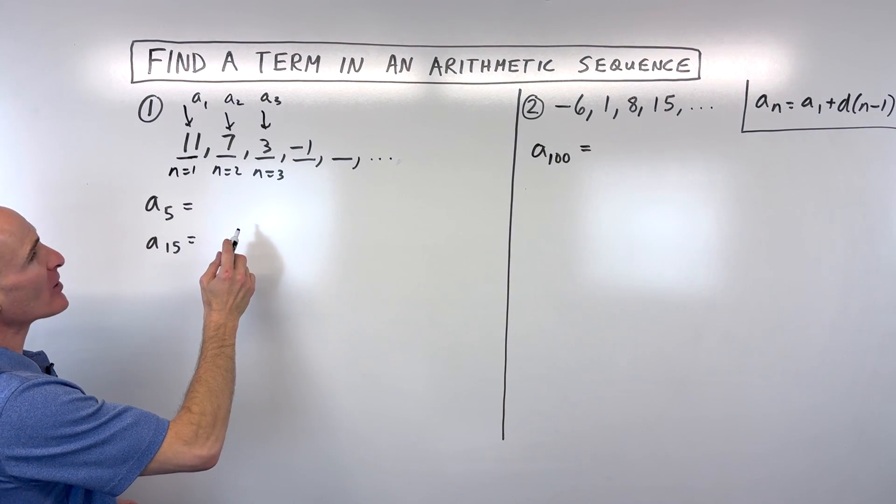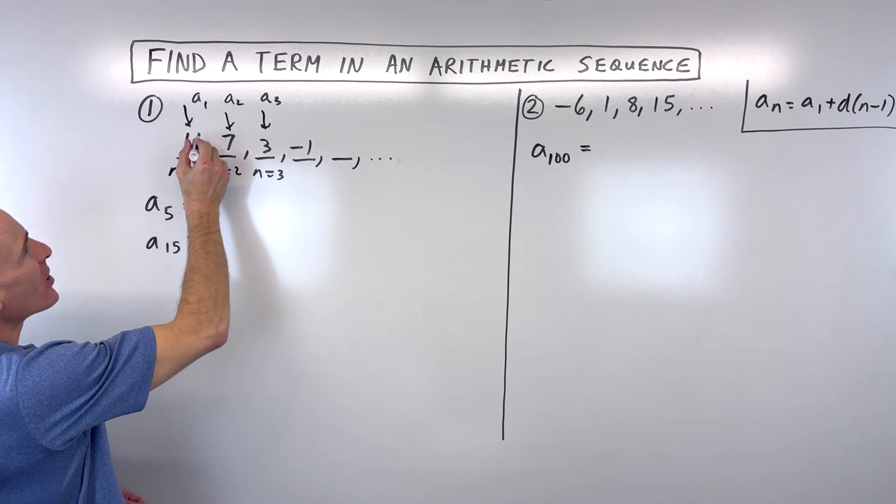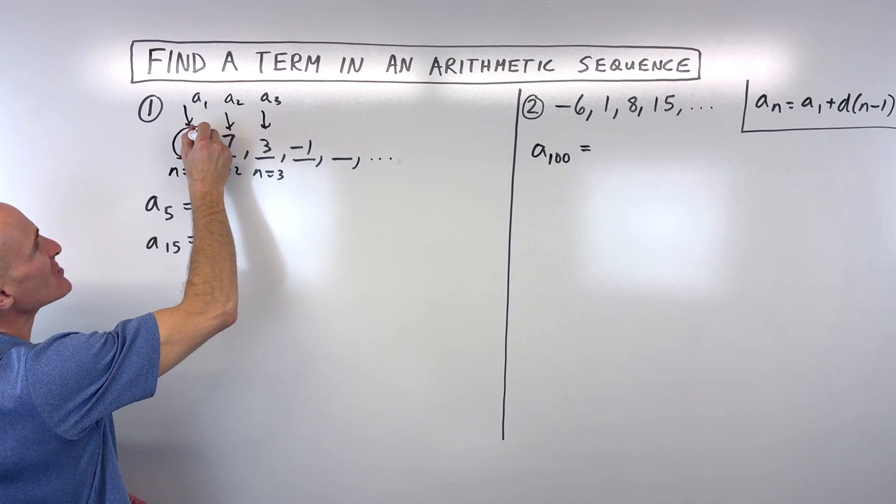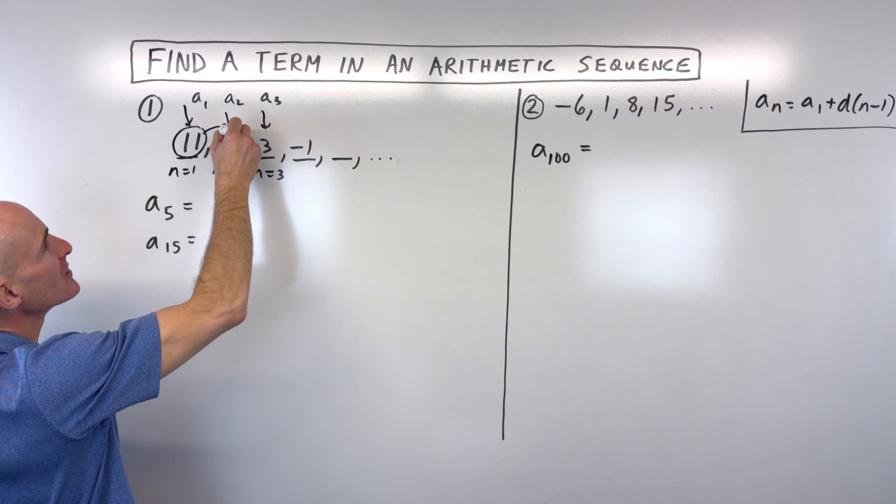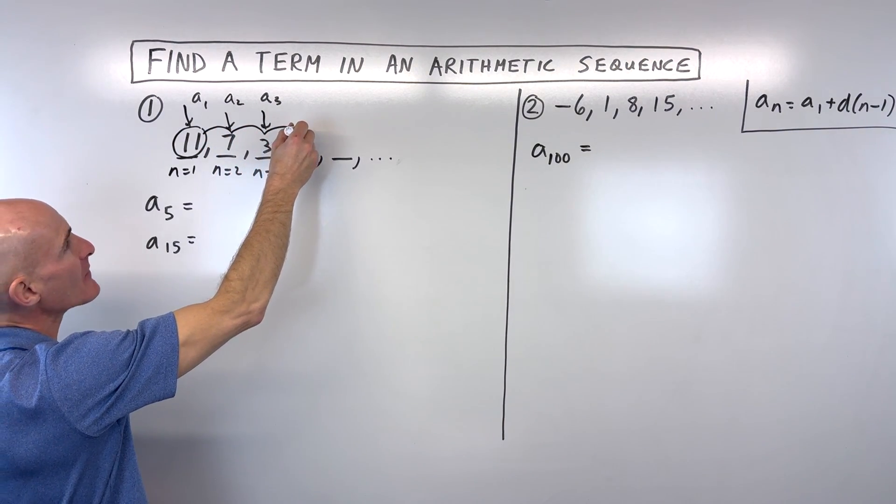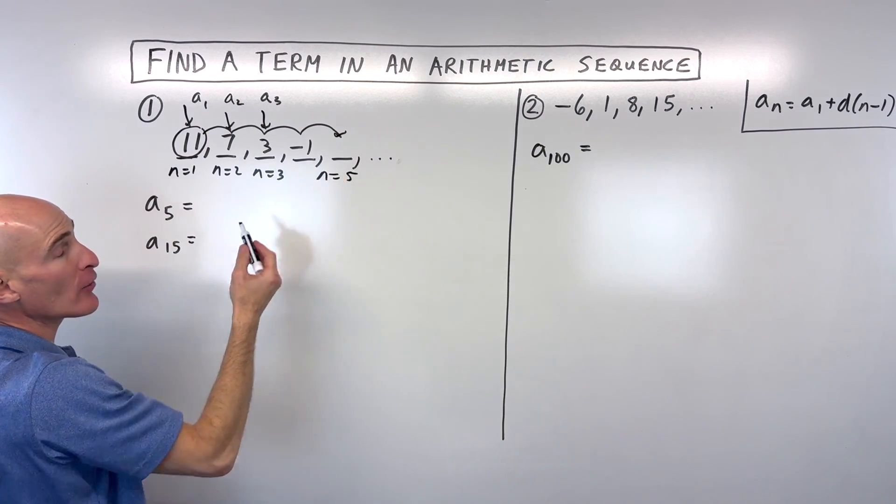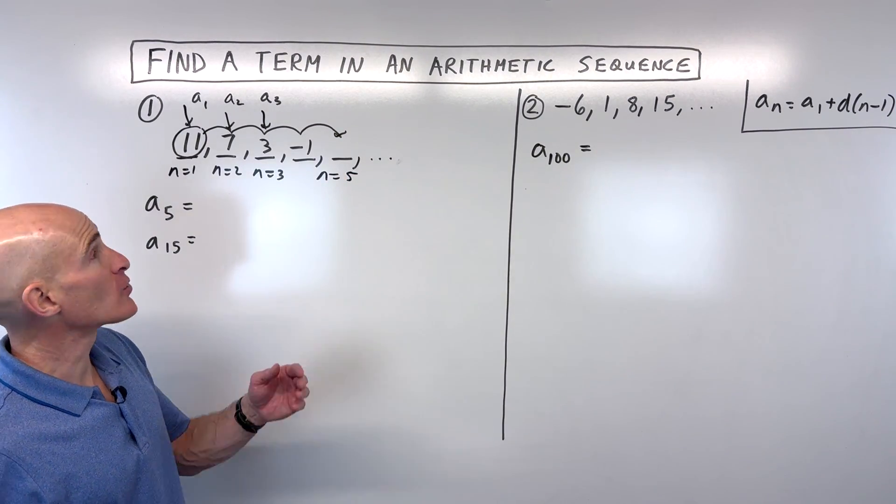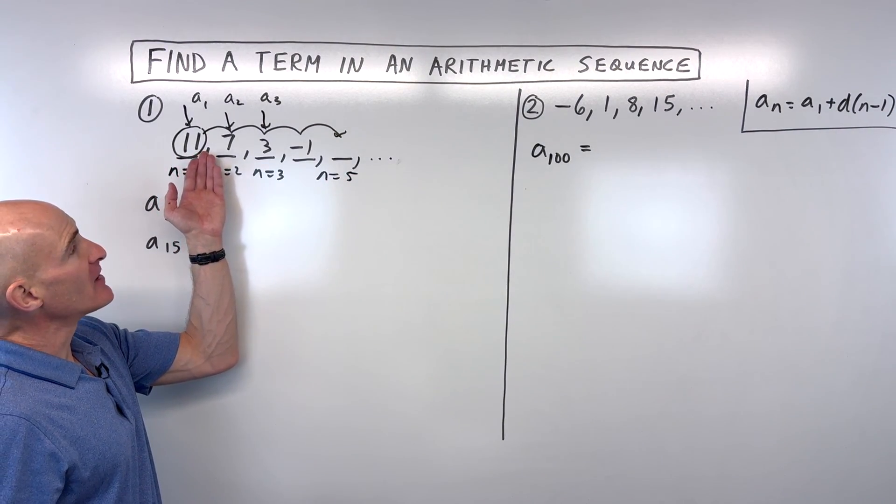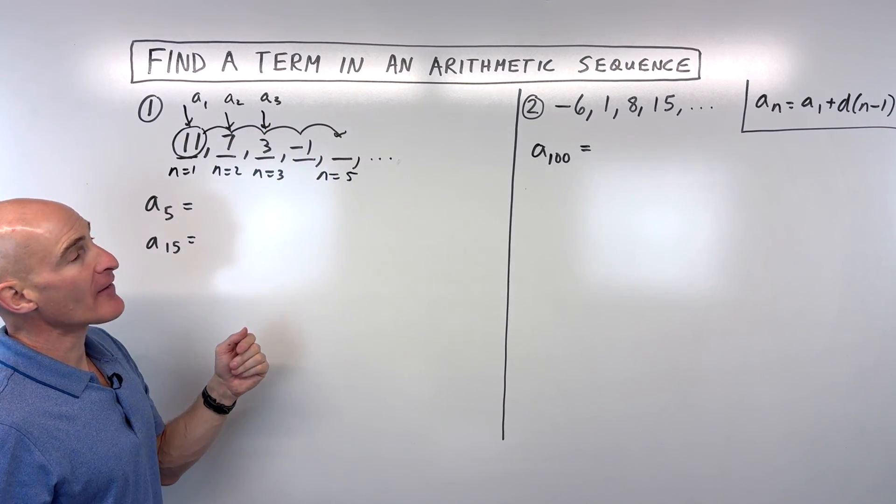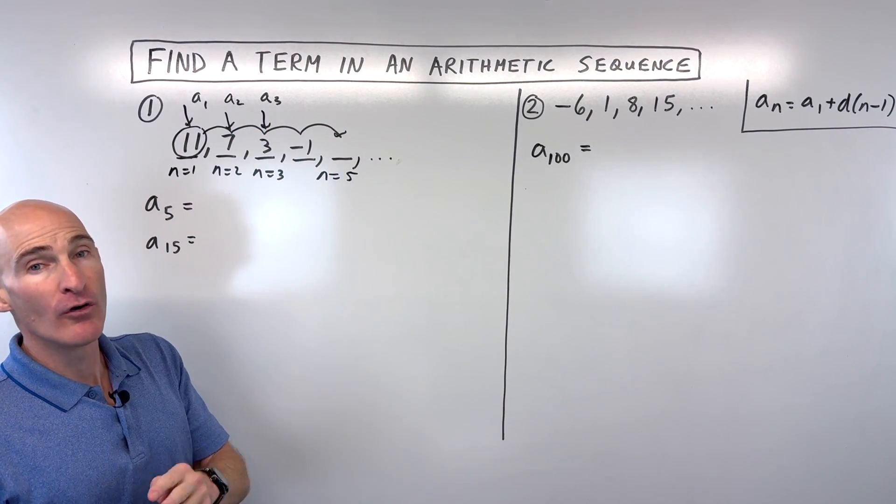So we're going to look for a pattern here. And so here's the pattern that I want you to kind of be aware of. We're starting at this first term, which is 11. And we're subtracting 4 once, twice, three times, four times to get to the fifth term. Now why only four times? Well, because we're already at the first term, so to get to the fifth term, we only have to subtract 4 four times.